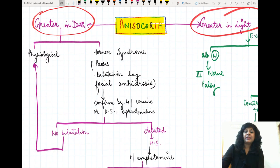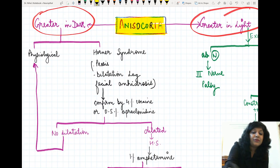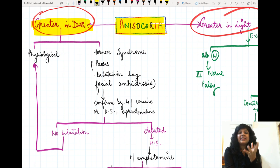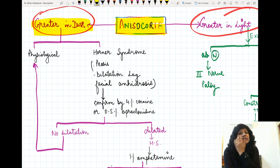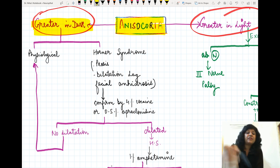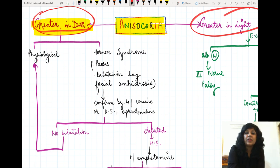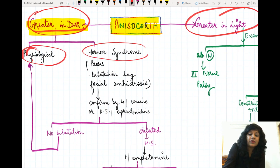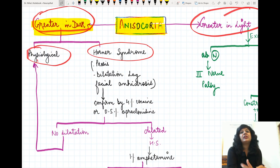When anisocoria is increasing under dark conditions, we have to think of two possibilities: either it is physiological or it is a case of Horner syndrome. A related question came in AIIMS where they said that dilatation was less and anisocoria was more under dark conditions — that was a case of Horner syndrome. So let us see how to evaluate such conditions.